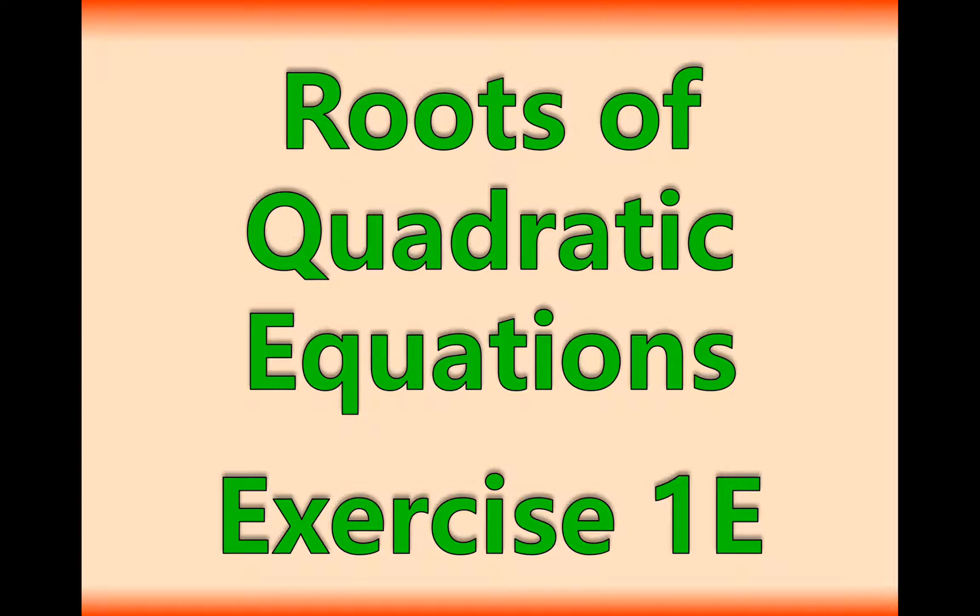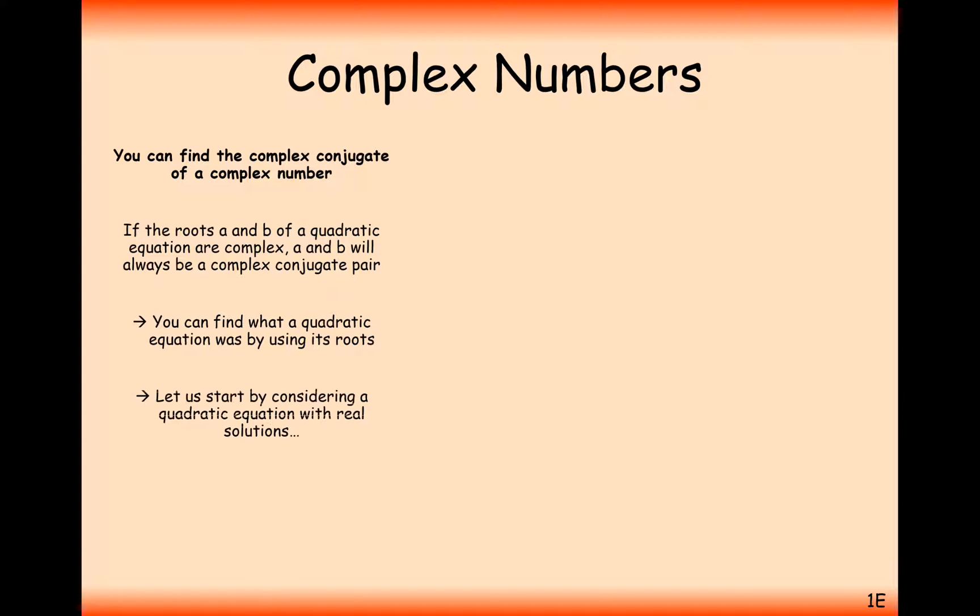Let's remind ourselves of quadratic roots and what happens when we solve a quadratic equation. If we have x squared plus 7x plus 10 equals 0, we can solve this by factorising, one of three different ways to solve quadratic equations. So x plus 5, x plus 2, which means our solutions are x equals minus 5 and x equals minus 2. The roots of the quadratic are minus 2 and minus 5.